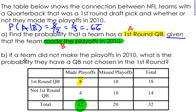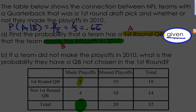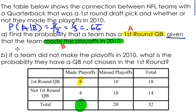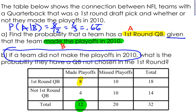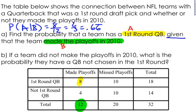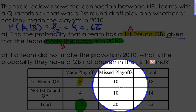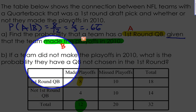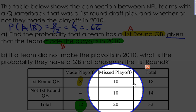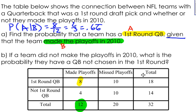Part B: If a team did not make the playoffs in 2010, what is the probability they have a quarterback not chosen in the first round? This is also conditional probability, even though it doesn't use the word 'given.' The 'if a team did not make the playoffs' part is the given condition, so I'm only focusing on the 20 teams that missed the playoffs. Of those 20, ten do not have a first-round quarterback.